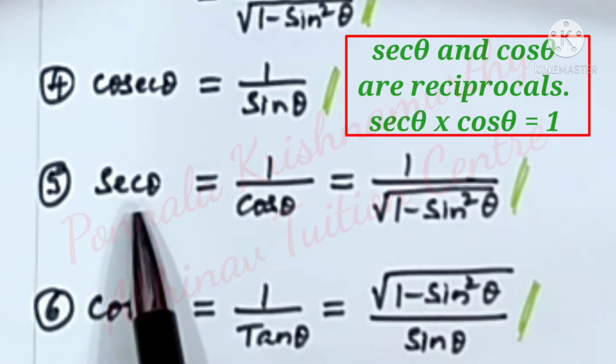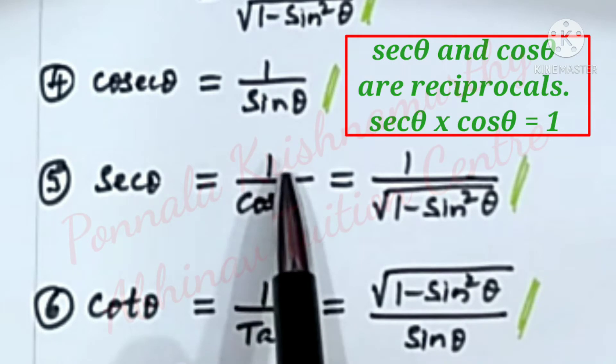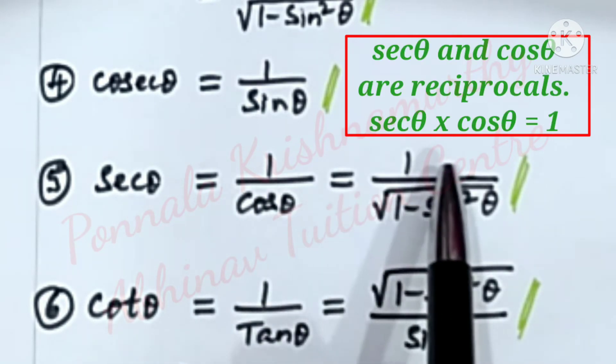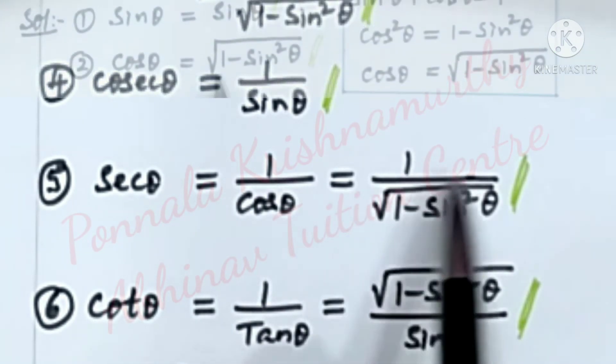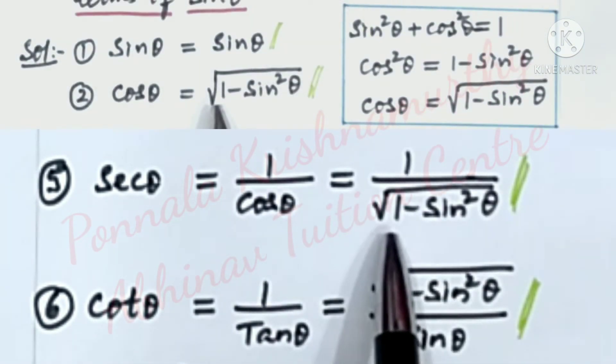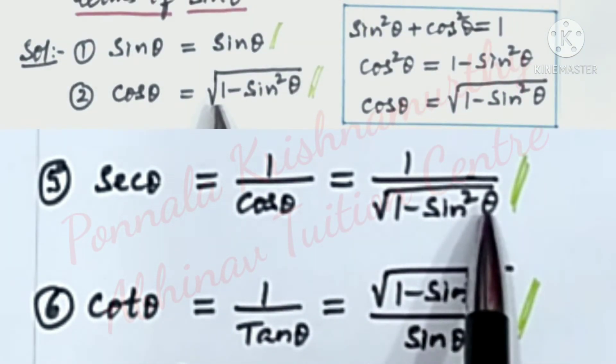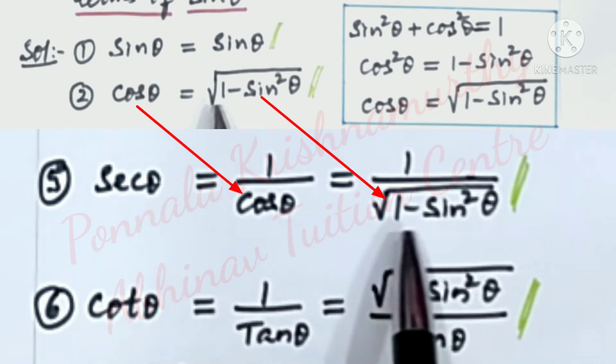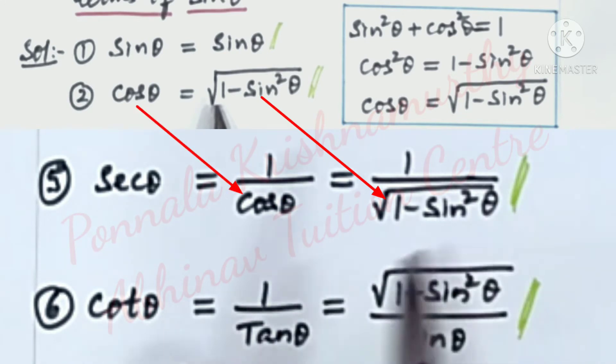Fifth: secant theta is equal to 1 by cos theta. That is equal to 1 by under root 1 minus sin square theta, since cos theta is equal to under root 1 minus sin square theta.